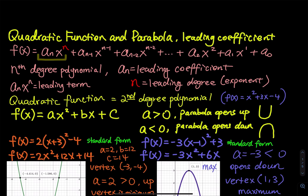The general form is f of x equals ax squared plus bx plus c. Since the highest exponent is 2, we know the graph is a parabola. Looking at the coefficient a: a is the coefficient of x squared, b is the coefficient of x. When a is positive, the parabola opens up — a u-shape that opens up. When a is less than 0, the parabola opens down, giving an upside-down u-shape.